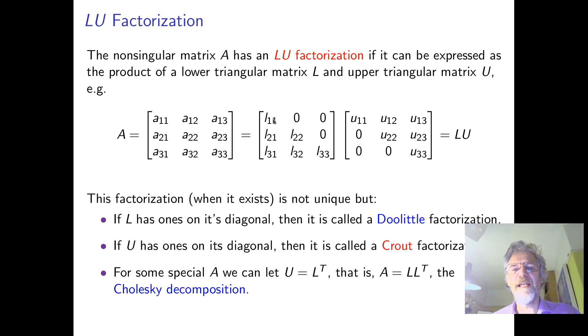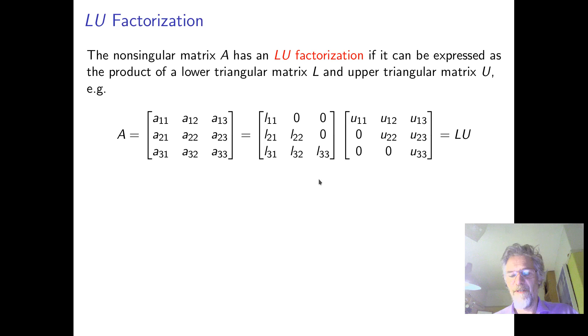It's not actually unique. You can make a choice of scaling the diagonals here in U or the diagonals in L. In particular, when we do Gaussian elimination, we can have ones here if we want. If it has ones in the diagonal, then it's called a Doolittle factorization. You can also choose to have the ones in the lower triangular factor and that's called a Crout factorization. I guess they came up with the idea separately.